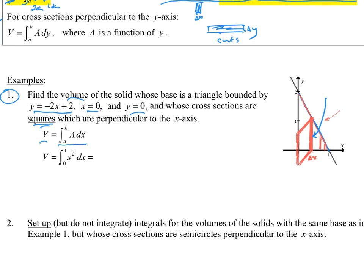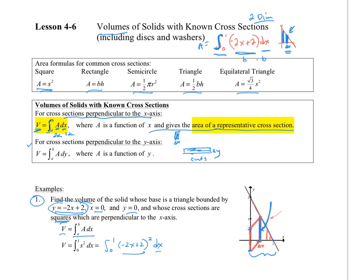Volume is equal to the integral from a to b of A(x) dx. What kind of shape do we have? A square. The area of a square is s squared. What is s? S is the length of the cut, which is simply the height of the function there. So this goes from 0 to 1 — that's my interval — and then I take negative 2x plus 2, squared, times dx. This is my area times a width, giving me volume. Notice the difference: the 2D integral gives area, while this 3D integral gives volume.